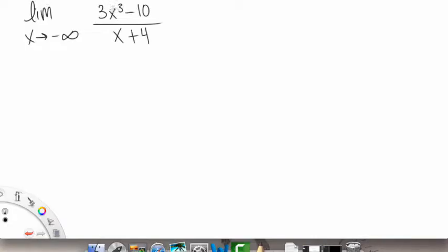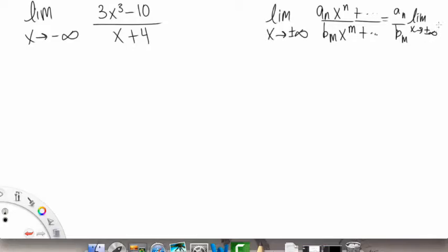So here we're just going to apply the formula that we know. The limit as x goes to plus or minus infinity, then we have aₙxⁿ over bₘxᵐ, and then we might have extra terms added on, but those go away. And this becomes aₙ over bₘ times the limit as x goes to plus or minus infinity of x^(n-m).